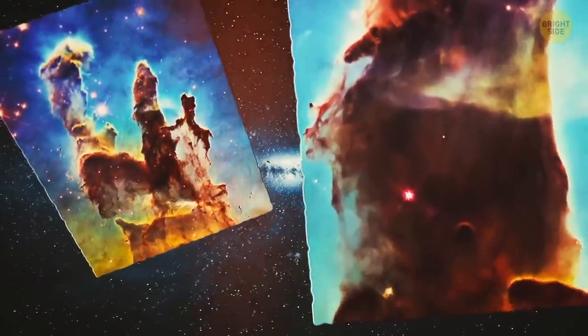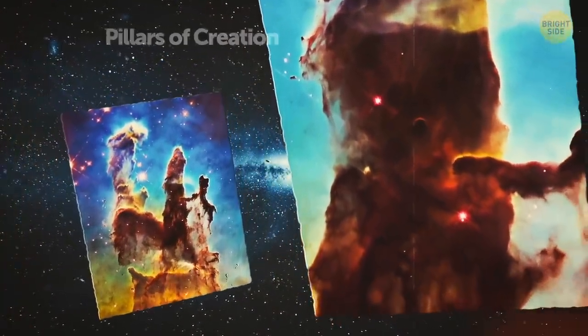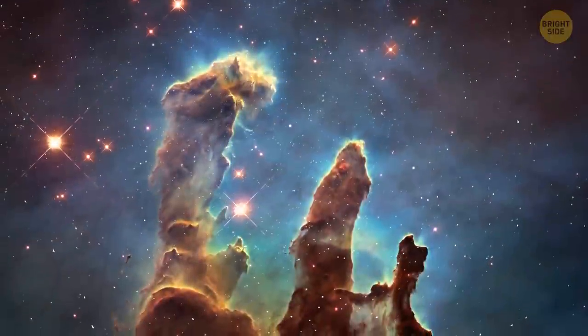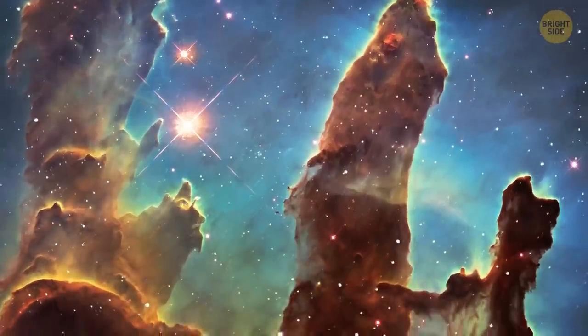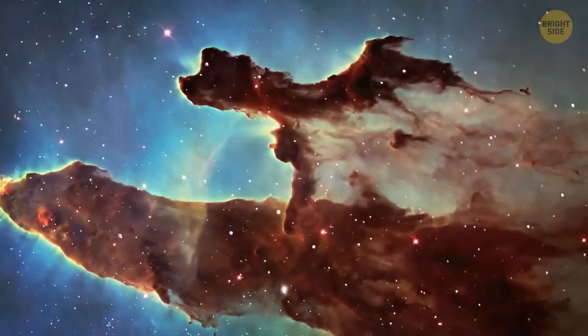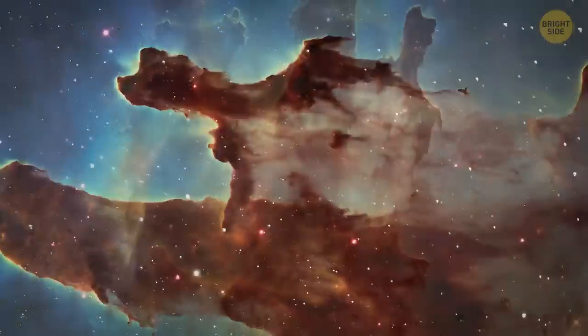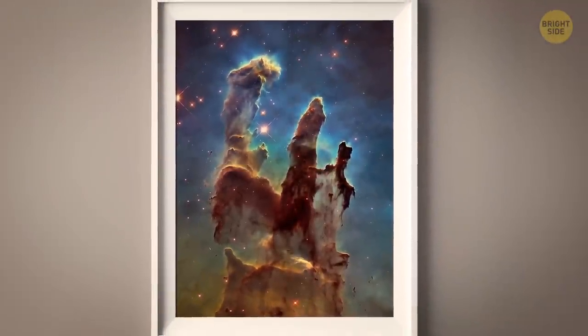One of the most famous images taken by the Hubble Space Telescope is the Pillars of Creation. It's a photo of a region of the Eagle Nebula, where new stars are born. The photo, which was taken in 1995, shows massive pillars of gas and dust towering above the nebula. It has become one of the most iconic images of the universe.